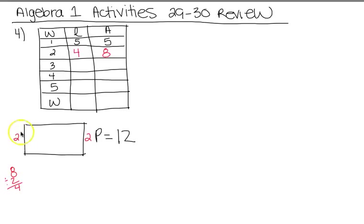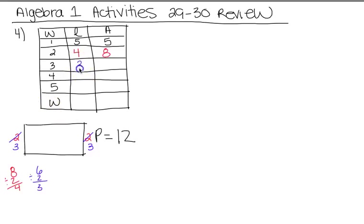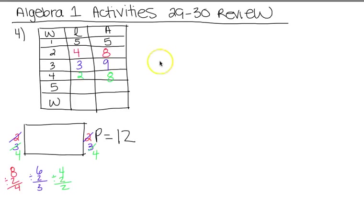If we change the width to 3, then 3 plus 3 is 6, so 12 minus 6 is 6 remaining. Divide by 2 — the length would also be 3, making it a square, and 3 times 3 gives us area 9. Going to width 4: 4 plus 4 is 8, leaving 4 to divide by 2, which is 2. So area is 8. And for width 5, the length would be 1 and the area would be 5.